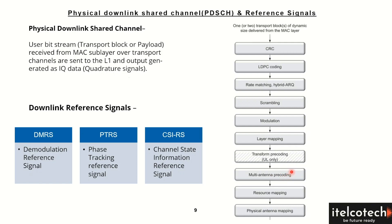In the time and frequency domain, all the information is incorporated at the resource element level. There are different reference signals in downlink: the demodulation reference signal (DMRS), the phase tracking reference signal (PTRS), and the channel state information reference signal (CSI-RS).